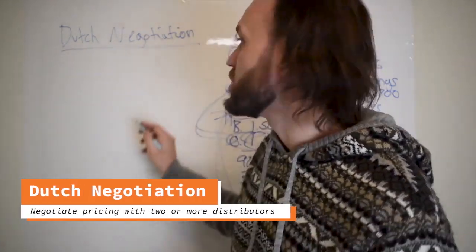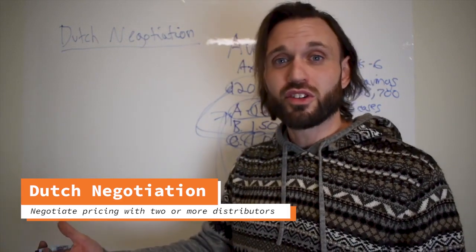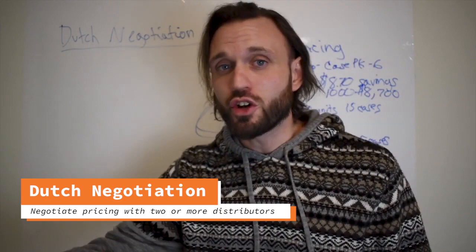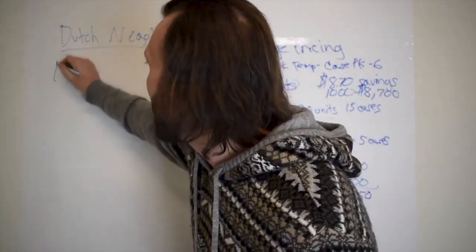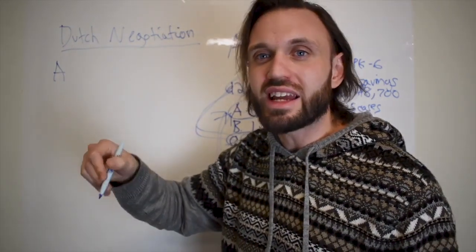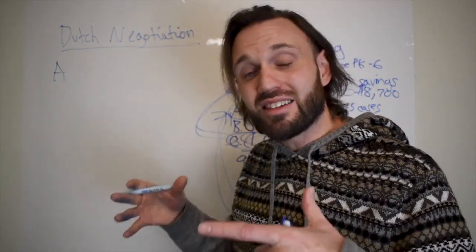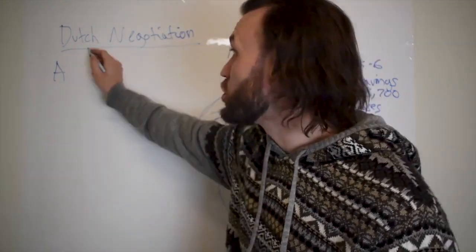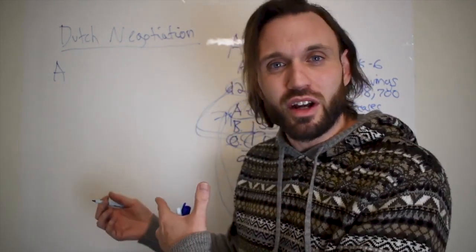The idea behind a Dutch negotiation is to negotiate pricing with two or more distributors and then tell the other distributor what the other distributor is giving you the product for. So let's say distributor A, this is with the understanding that these are larger distributors. If you're operating in a city and you're working with smaller distributors, trying to do a Dutch negotiation with two distributors in that city, then this may work as well.